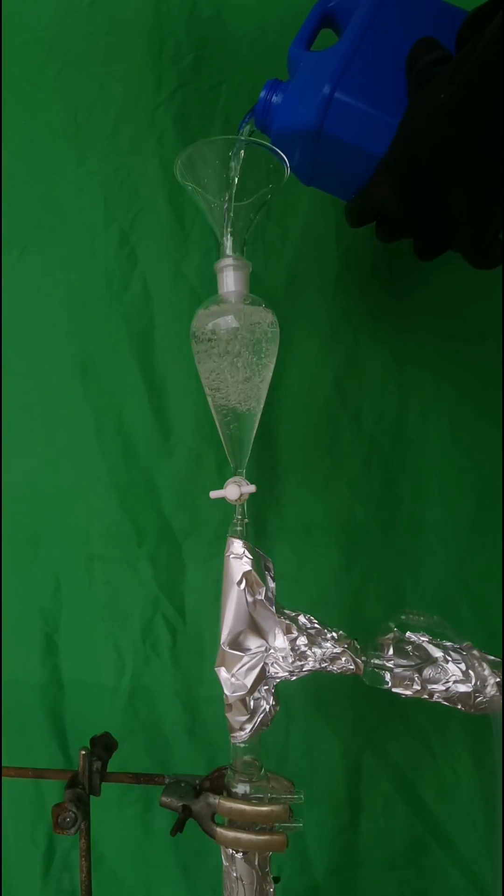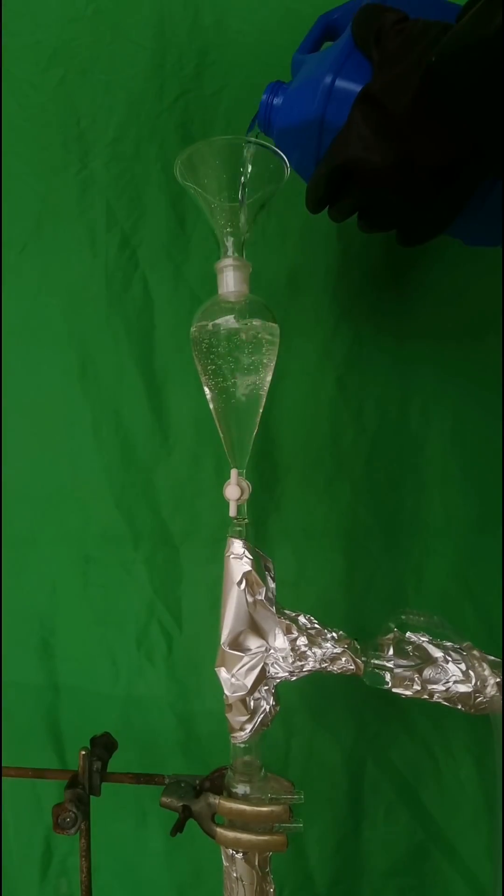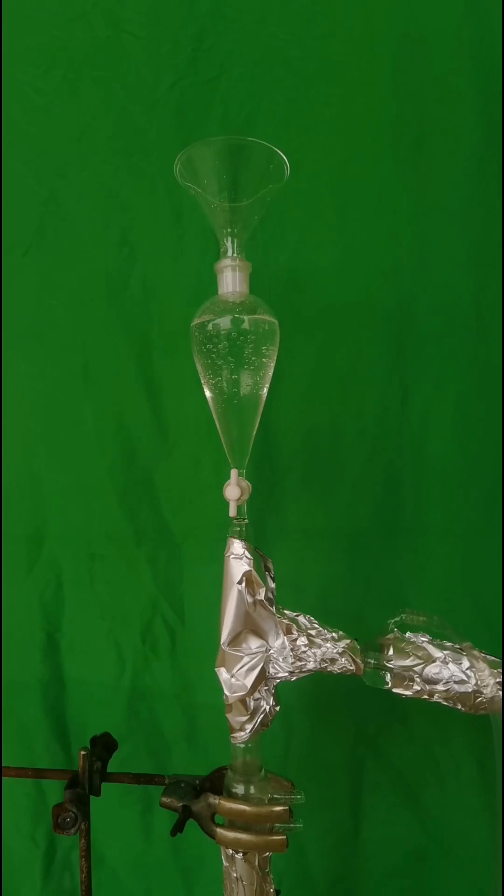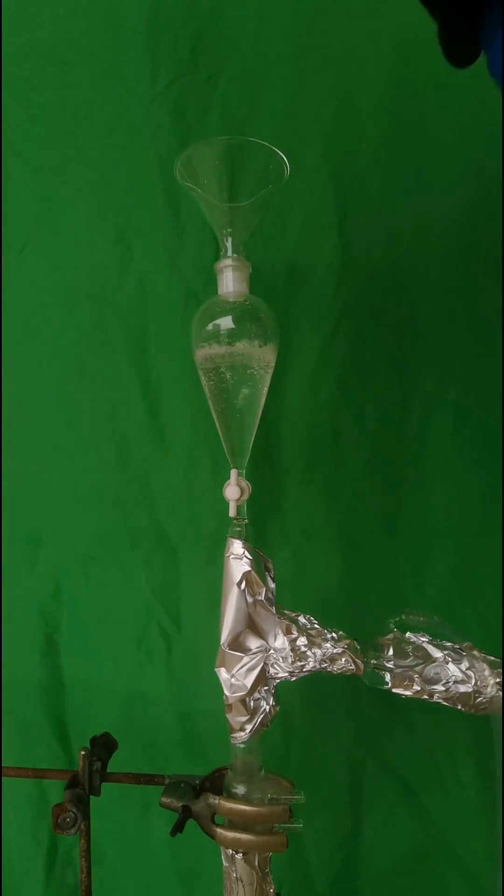Today, I will make 98% hydrogen peroxide. At first, I pour some 50% hydrogen peroxide to the funnel.